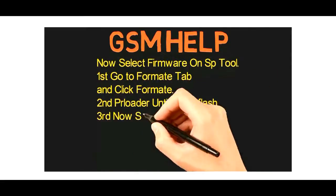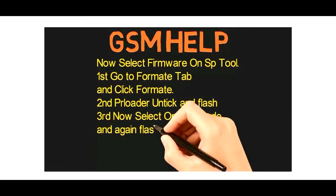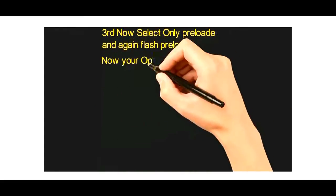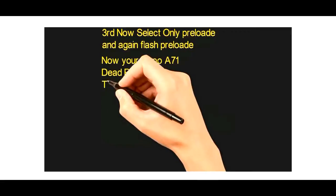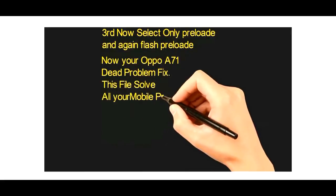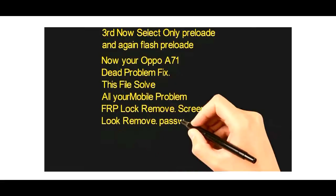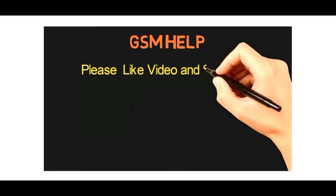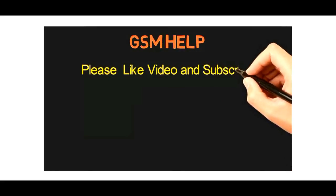Click Format. Second, untick preloader and flash. Third, select only preloader and again flash the preloader. Now your OPPO A71 dead boot problem is fixed. This file solves all your mobile problems: FRP lock remove, screen lock remove, password remove.